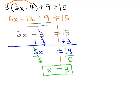As always, we like to check our answer to make sure we found the correct number for x, that makes this equation true. So let's see what happens when we replace the x with 3. The original problem was 3, times 2, times x, which is now 3, minus 4, plus 9. And we hope that equals 15.